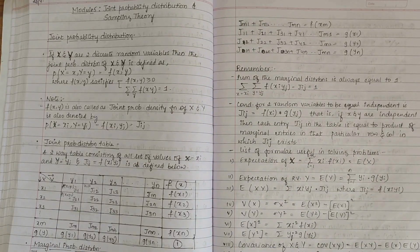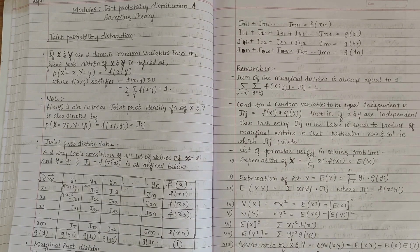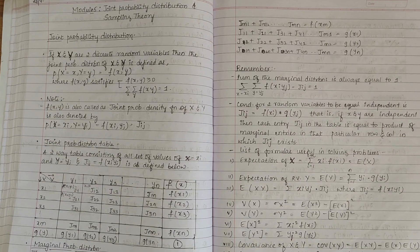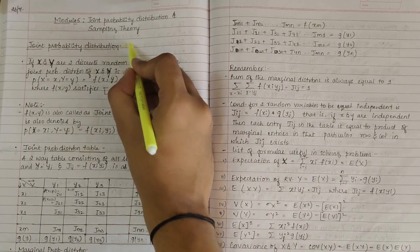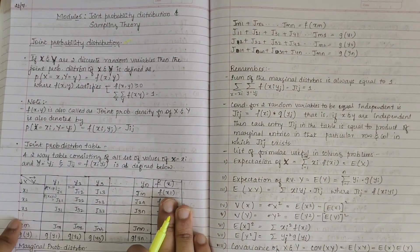This video will be covering the theoretical concepts and important formulas required for starting this new chapter, that is joint probability distribution and sampling theory. So let's first understand what joint probability distribution is. If X and Y are two discrete random variables, then joint probability